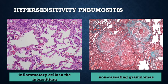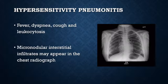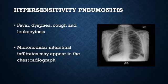Histologic changes are characteristically centered on the bronchioles. They include interstitial pneumonitis consisting primarily of lymphocytes, plasma cells, and macrophages. There can also be presence of non-caseating granulomas, which can be seen in two-thirds of patients, with interstitial fibrosis. In acute attacks, symptoms include fever, dyspnea, cough, and leukocytosis. Micronodular interstitial infiltrates may appear in the chest radiograph, and pulmonary function tests show an acute restrictive disorder. If exposure is continuous and protracted, a chronic form of the disease supervenes, leading to progressive respiratory failure, dyspnea, cyanosis, and a decrease in total lung capacity and compliance.